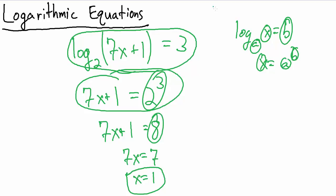So if we have x equals 1 and we want to check our answer, what happens? Well, we get base 2 log of 7 times 1 plus 1, which equals the base 2 log of 8, since 7 times 1 is 7, and 7 plus 1 is 8.